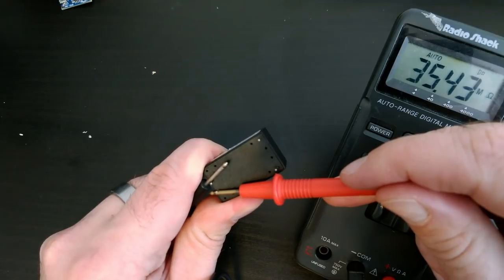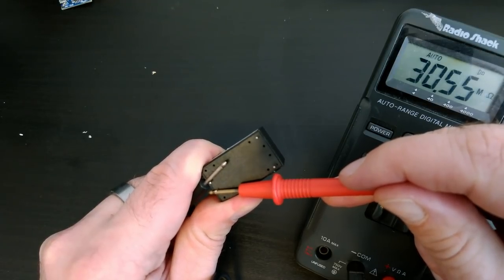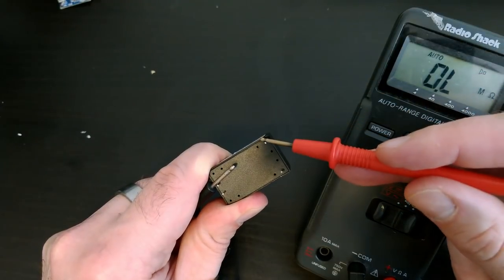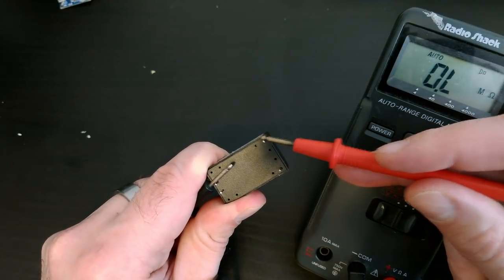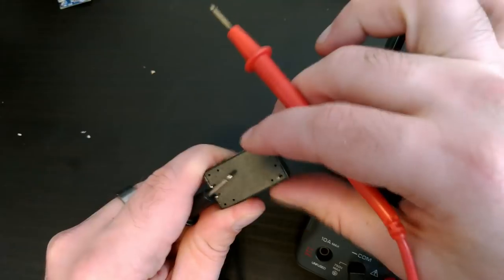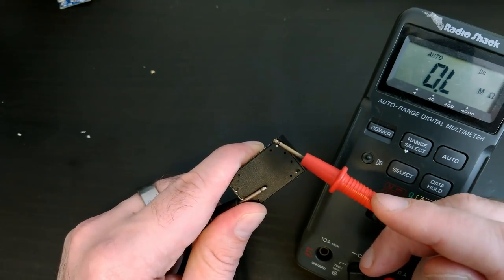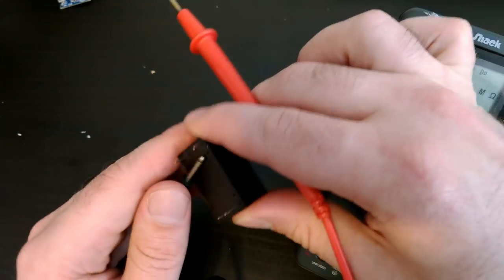So just to show that off, I'm going to show you that there's some connectivity on the AC side. It takes a little while because it's high resistance. There we go. But there's no connectivity to the DC side, so it's fully electrically isolated. Nothing, nothing.